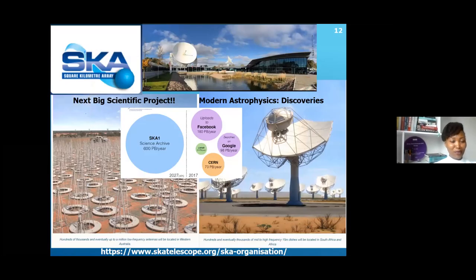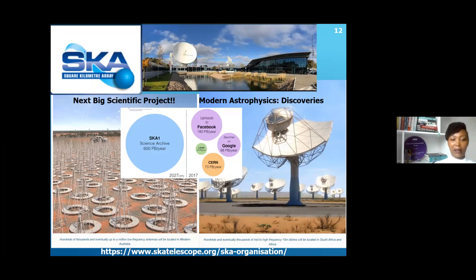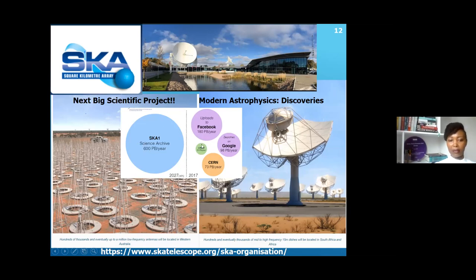Most of you have heard about the Square Kilometre Array, which is going to be the next big scientific project in the southern hemisphere. We'll have SKA-1 in Australia and then part two in the Karoo in South Africa. This is the SKA headquarters at the Jodrell Bank Observatory, showing the amount of data that will be produced from these scientific endeavors.